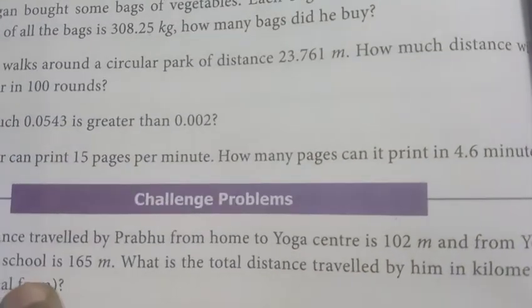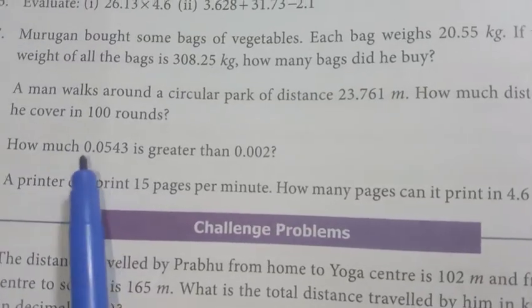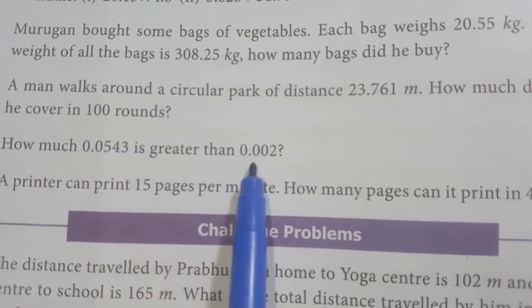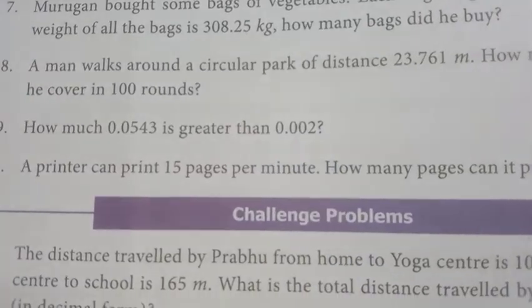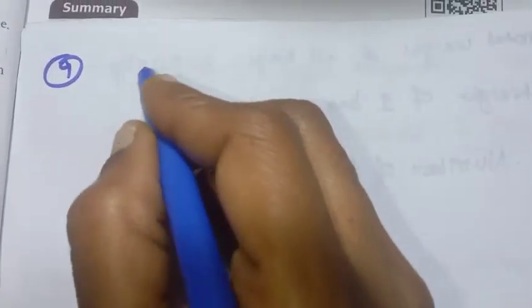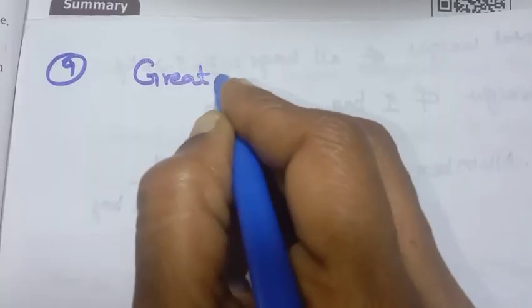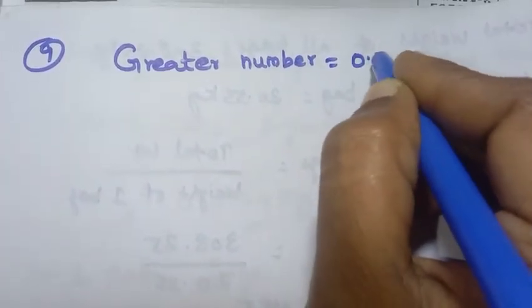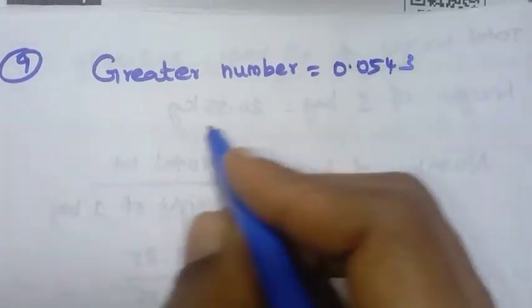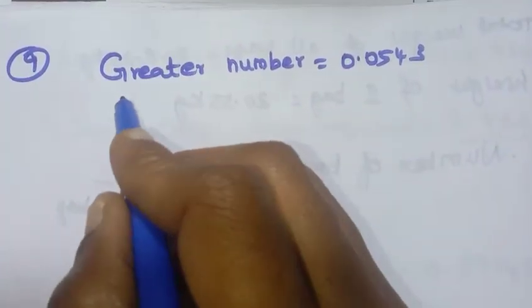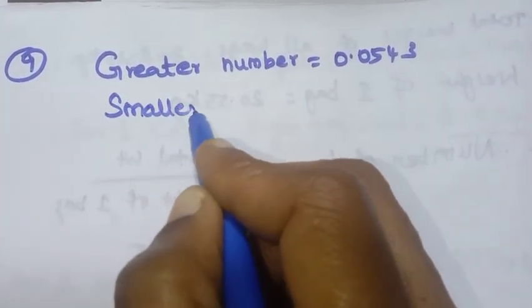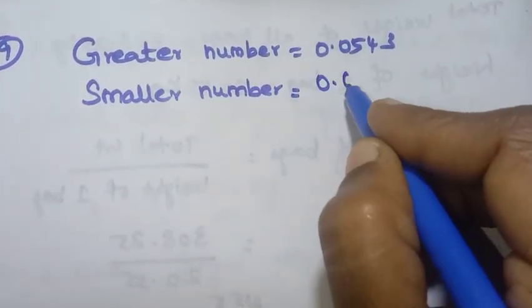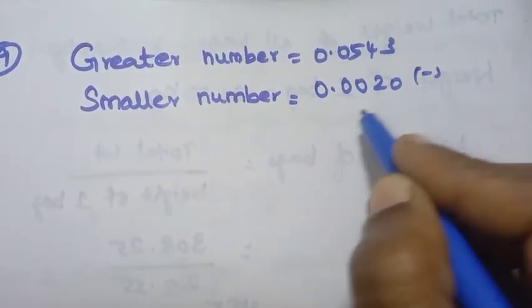Ninth question: How much greater is 0.0543 than 0.002? The greater number is 0.0543 and the smaller number is 0.0020.